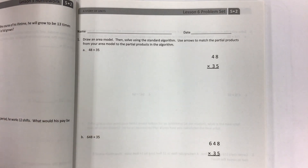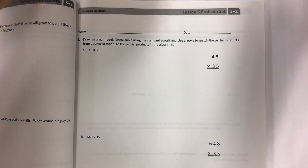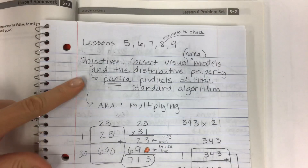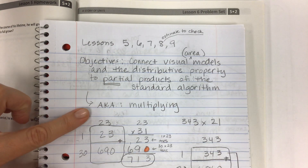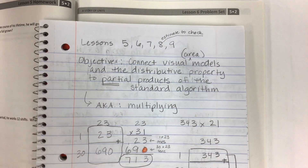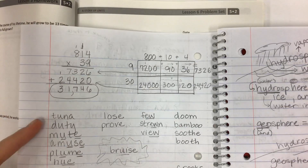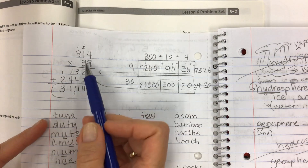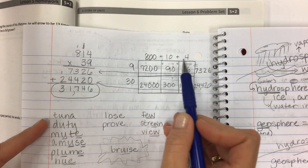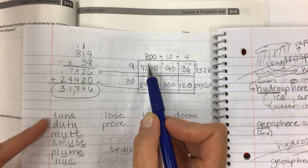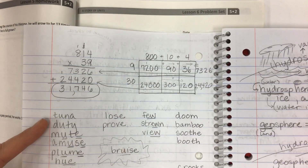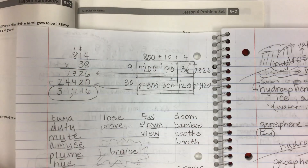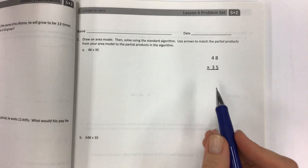Okay, this is lesson 6 and much like yesterday, the objective is the same — we're using the standard algorithm and area models to multiply. Today's work is going to be a bit more in-depth with larger problems. We're stretching out our model using the distributive property to take numbers apart and get easier products, then add those together for the partial products and compare to the standard algorithm.